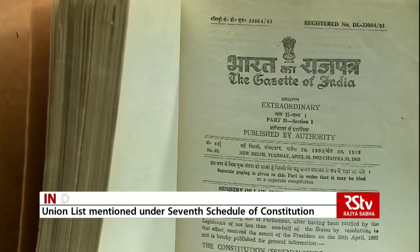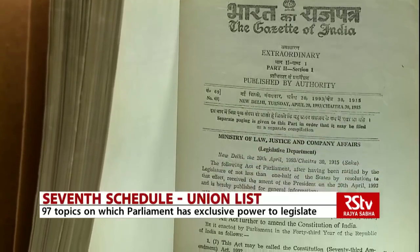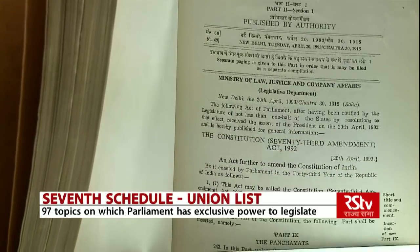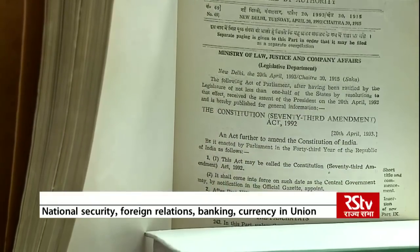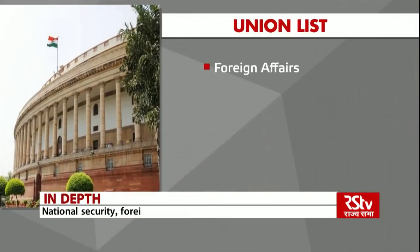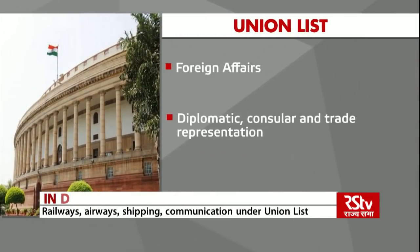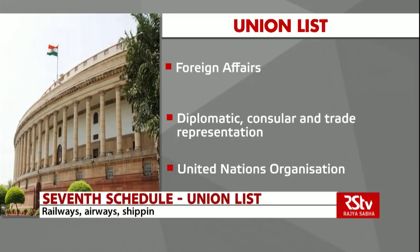It contains subjects which are basically relatable to the whole of the country. Take for example the union services, the armed forces. These are the subjects which are allocated to the central government and the central has got the right to make laws on these subjects. India's foreign relations, diplomatic ties and participation in global organisations also fall under the union list. Foreign affairs, diplomatic, consular and trade representation, United Nations organisation.